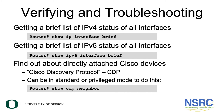You can get a brief list of IPv4 status of all interfaces on a router by simply typing 'show ip interface brief'. If you want to get a brief list of IPv6 status of all interfaces, you would type 'show IPv6 interface brief'.